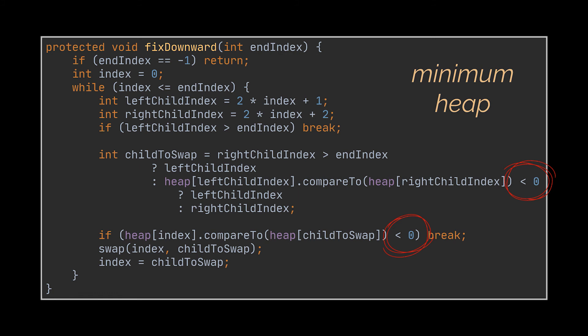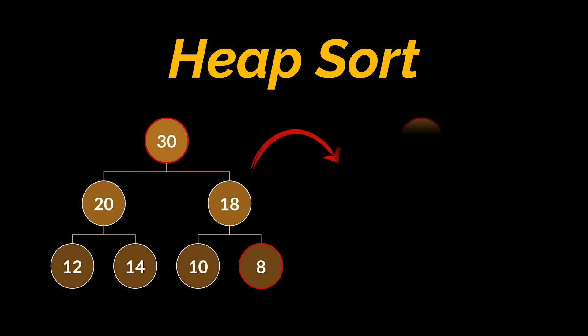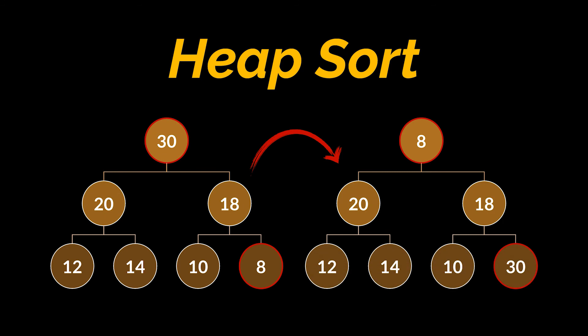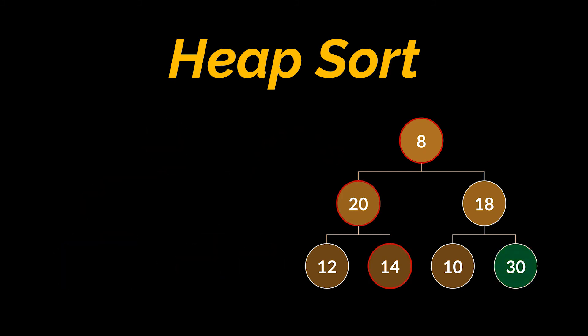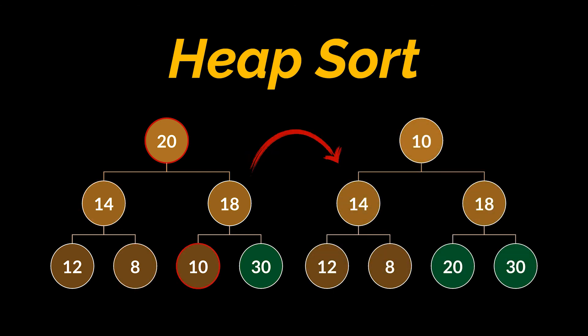Now that we can insert elements and retrieve the root, what remains is sorting the elements using the heap sort algorithm. Before implementing the sort method, let's understand how it works. Since the maximum element is at the root, we first take this element and swap it with the element at the very end of our array. Then we consider our tree to be the whole array minus this element, and we find the new maximum by traversing from top to bottom, placing it at the root. Next the new root is swapped with the element at the new end, and the same process is repeated until all the array is sorted and no root nodes are left.